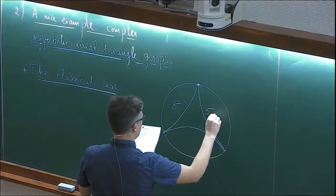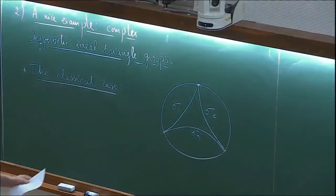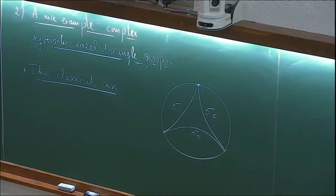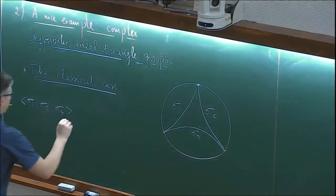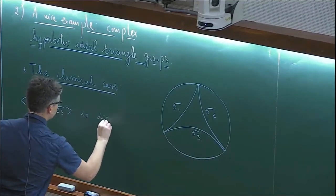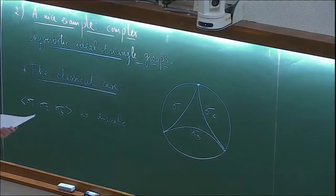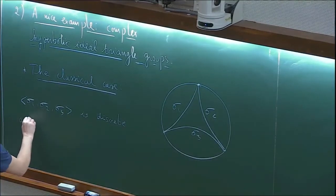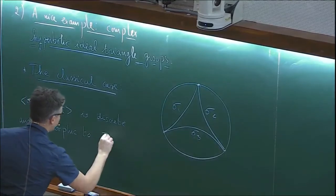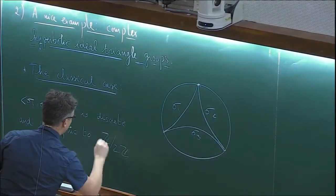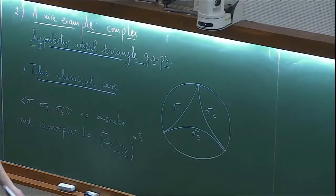Sigma 1, sigma 2, and sigma 3 are the reflections about the three geodesics. The group generated by sigma 1, sigma 2, and sigma 3 is discrete — discrete inside the group of isometries of the Poincaré disk — and isomorphic to the free product of three copies of Z over 2Z.